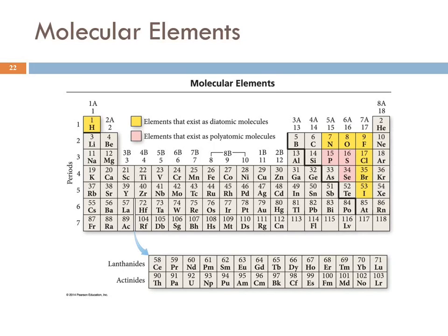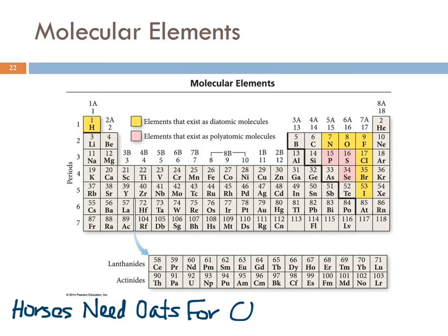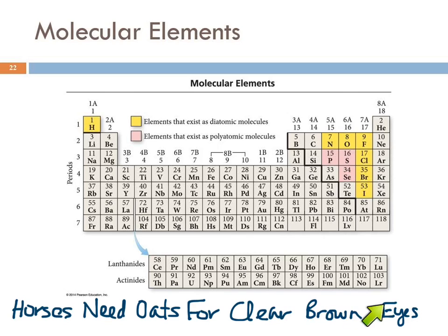Another way to remember them is with a mnemonic — a sentence where the letters mean something. The sillier a mnemonic is, the more likely you are to remember it. This is the one I like: 'Horses need oats for clear brown eyes.' H for hydrogen, N for nitrogen, O for oxygen, F for fluorine, Cl for chlorine, Br for bromine, and I for iodine.